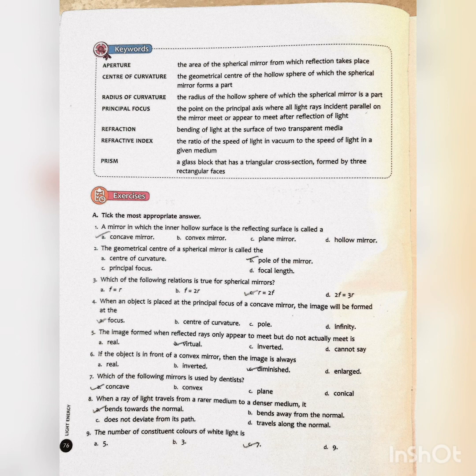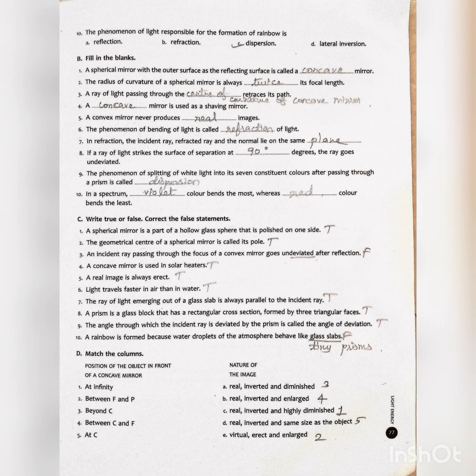Ninth one: The number of constituent colors of white light is... Answer is C, seven. Tenth one: The phenomenon of light responsible for the formation of a rainbow is... Answer is C, dispersion. Division B, fill in the blanks.